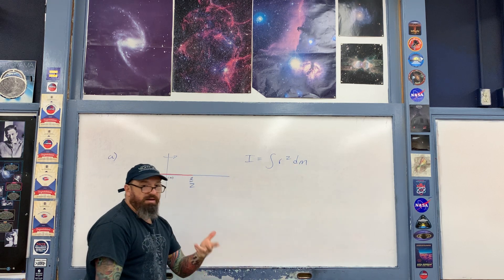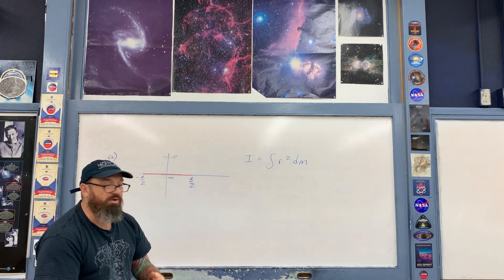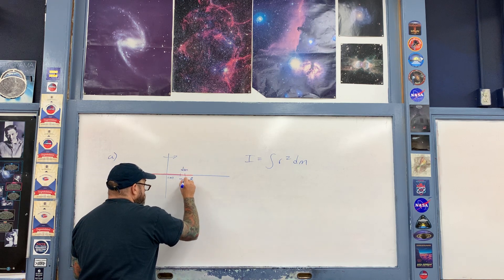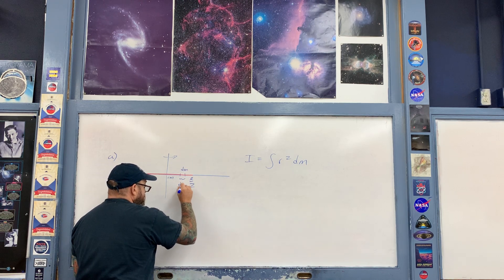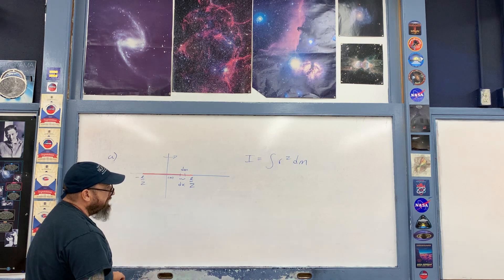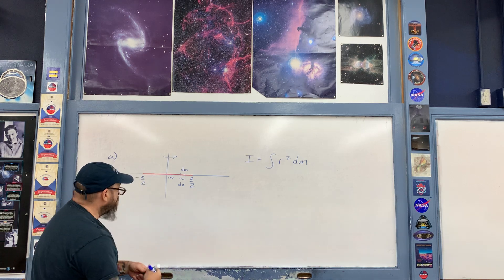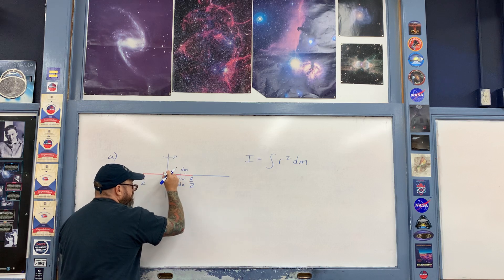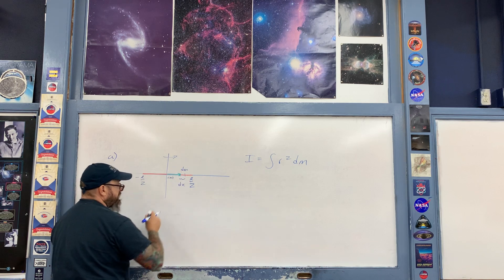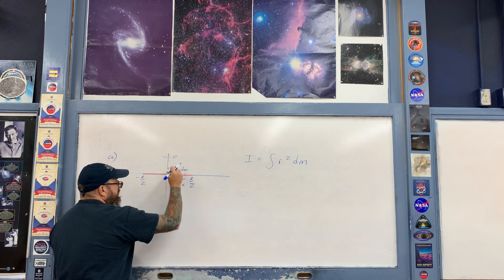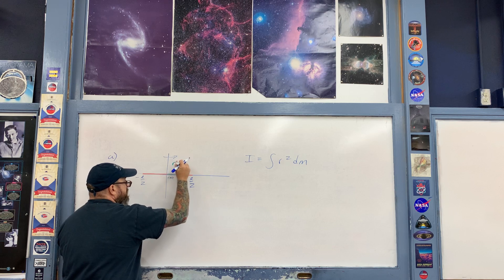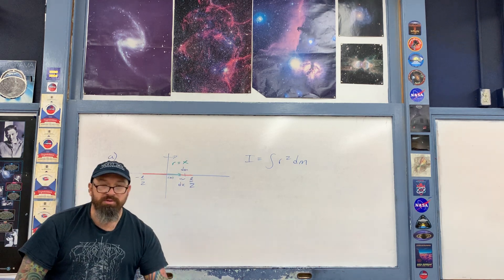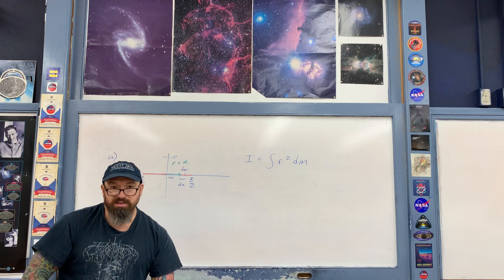We first take a look at an infinitesimally small amount of mass. Right here is a dm, and this mass has a length dx associated with it. Then we have the moment arm, which goes from the axis — in this case the center of mass — to the point where dm is located. The magnitude of this moment arm, r, we'll refer to as x.